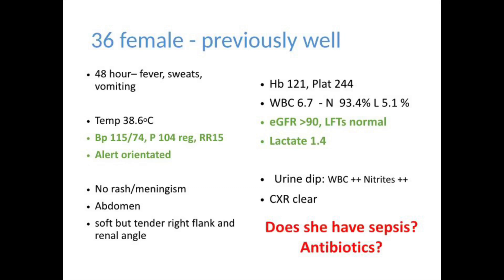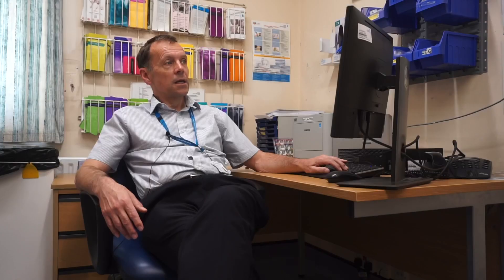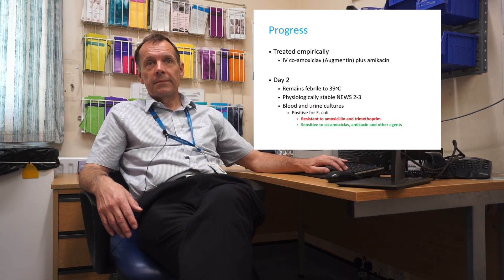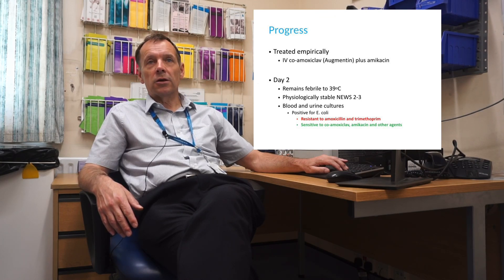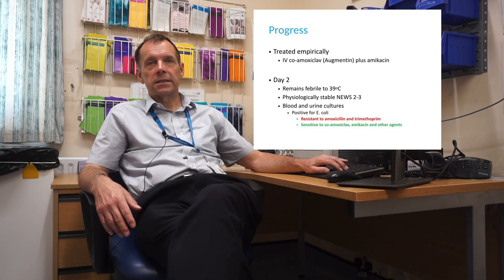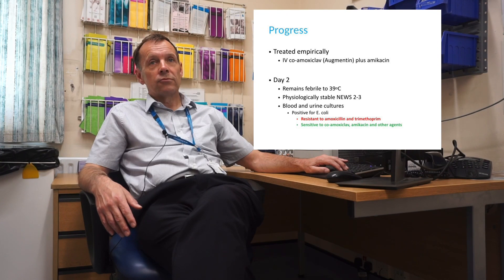On the next slide, the next two questions I ask myself are: has she got sepsis, and what antibiotics are we going to give her? As you can see from the results highlighted in green, physiologically she's stable — blood pressure 115 over 74, slightly tachycardic with a normal respiratory rate, alert and orientated, normal renal function and normal lactate — so she doesn't have sepsis. Do we need to give her antibiotics? Yes. She's got clear evidence of infection and upper tract renal disease needs urgent treatment. We treat her empirically with augmentin and amikacin. Your antibiotic choice will depend on your local guidelines; at our hospital this is our choice for significant community-acquired UTI with potential upper tract disease, with amikacin to cover resistant gram-negative organisms.